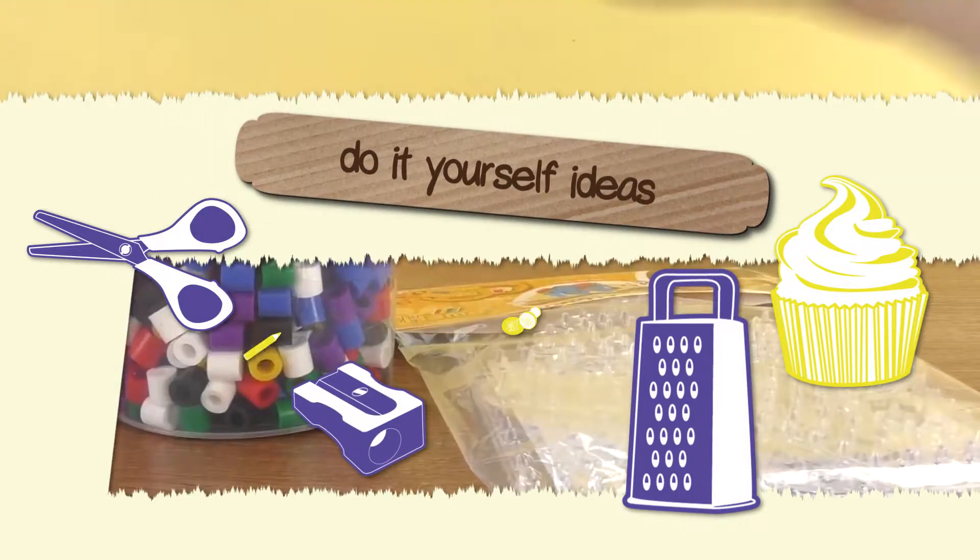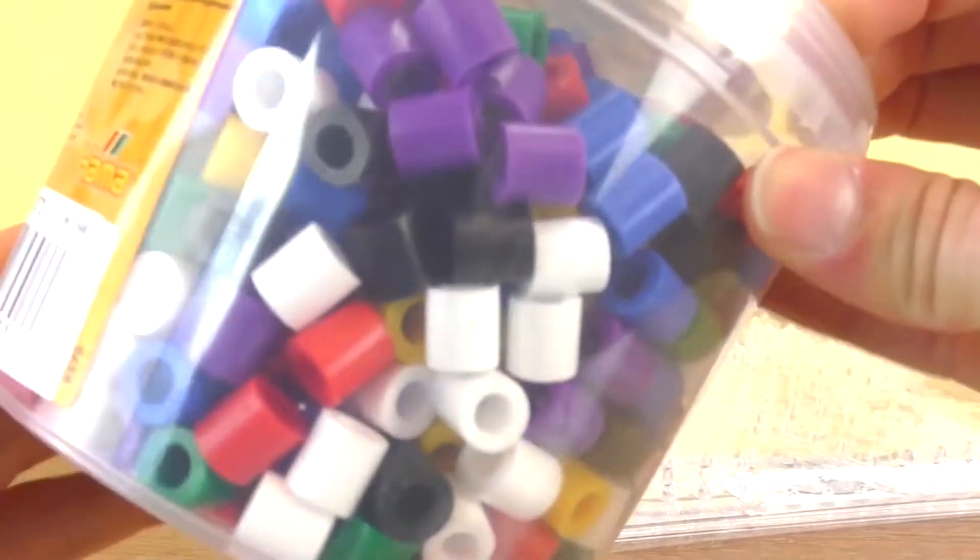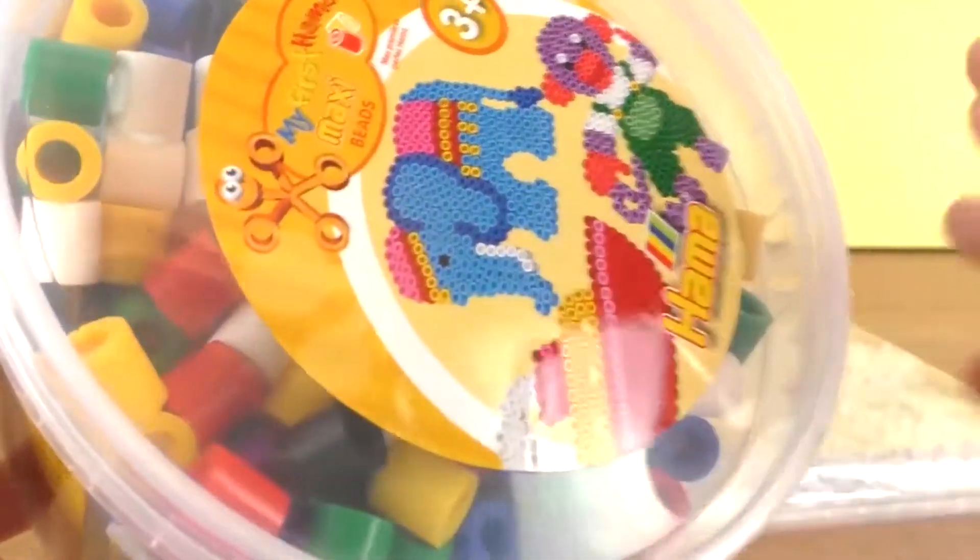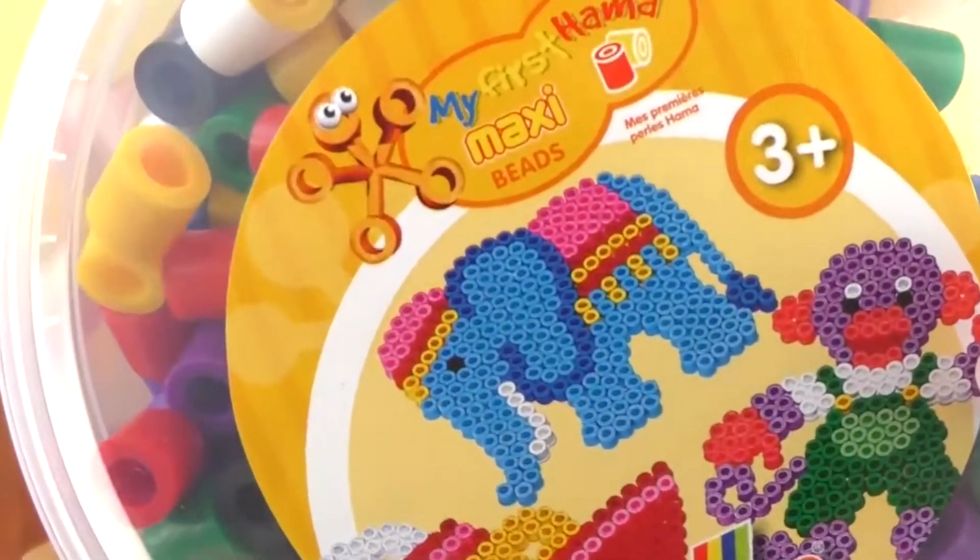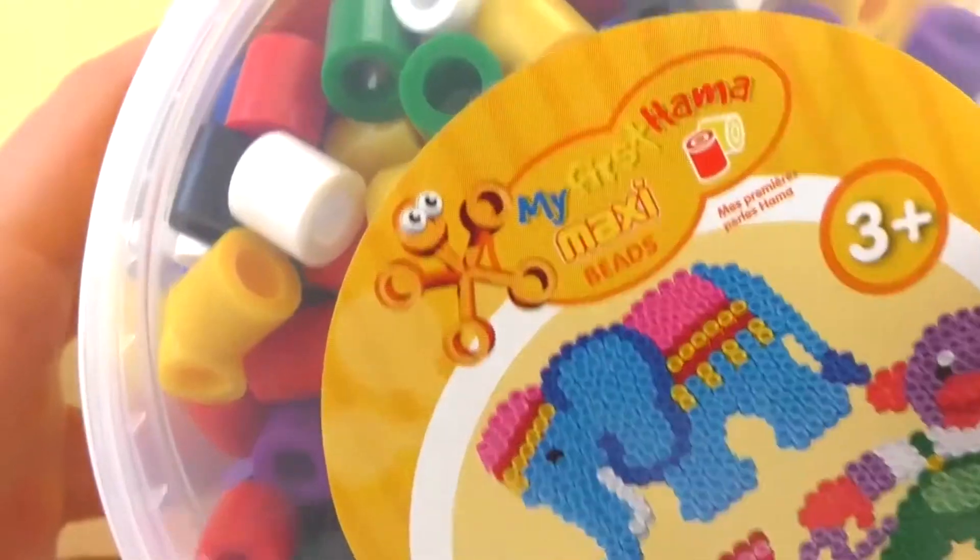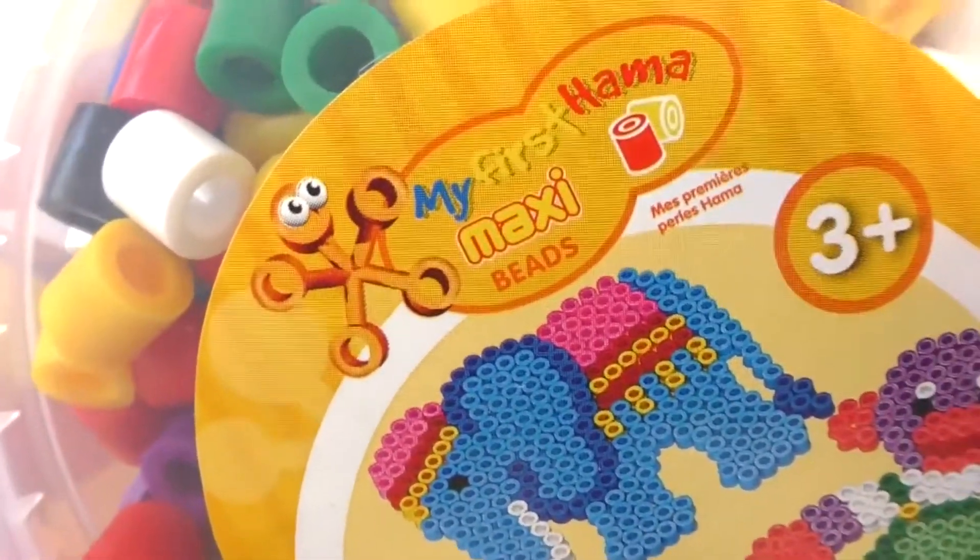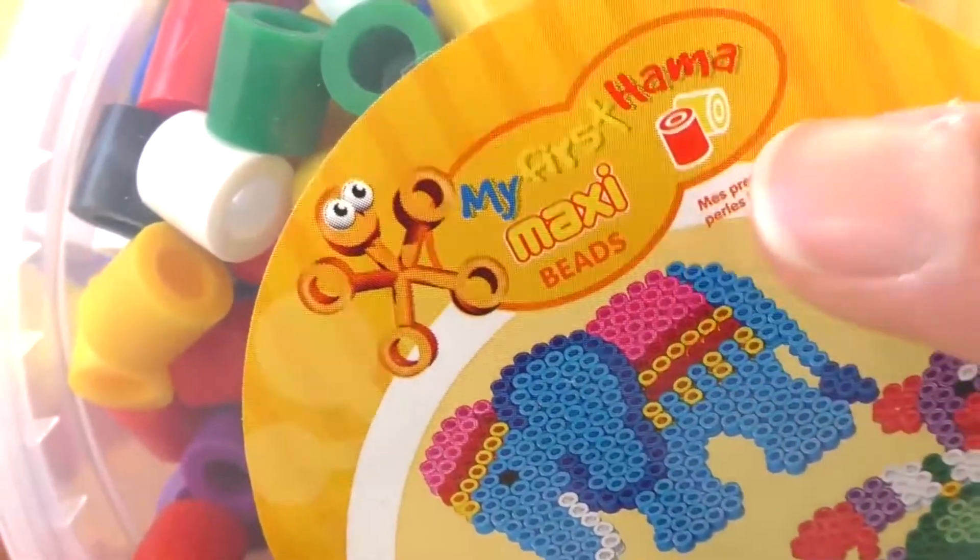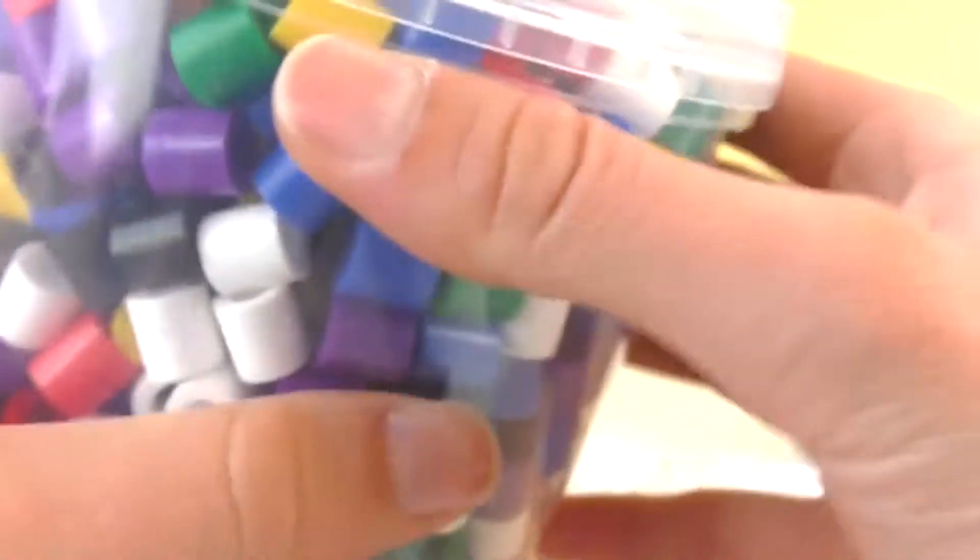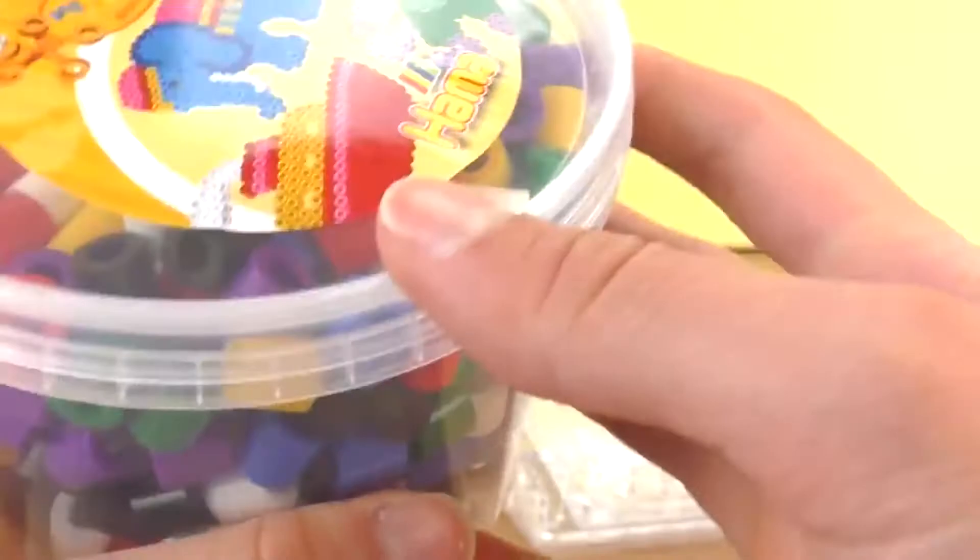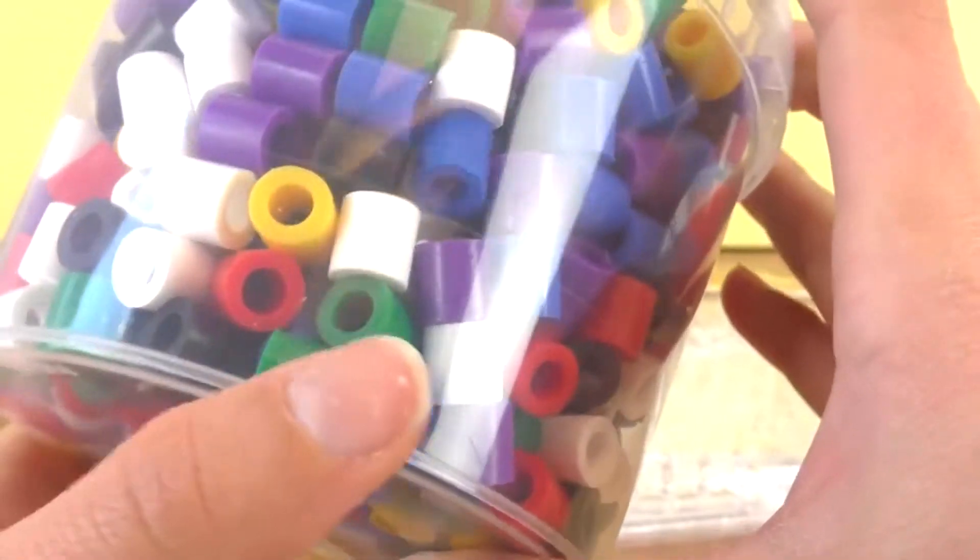Today I have a super cool new craft material: extra extra large ironing beads. These are intended for kids ages 3 and up. This is from Hama, My First Hama Maxi beads. These are the super big ones since they're a lot easier to work with, intended for younger kids.